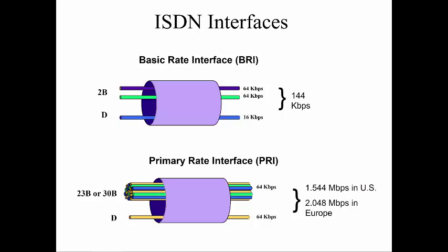A typical B channel is 64 kilobits, and a typical D (delta) channel is 16 kilobits. At the primary rate, the D channel is 64 kilobits, because it's really for bonded together D channels.